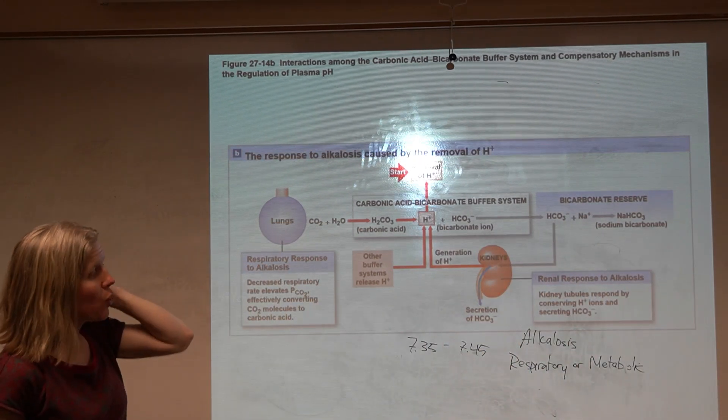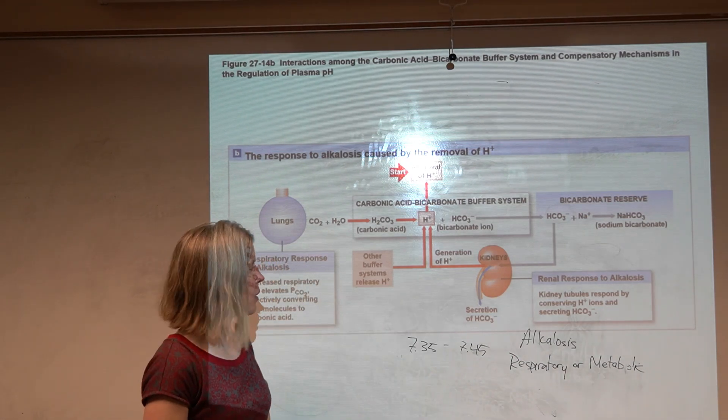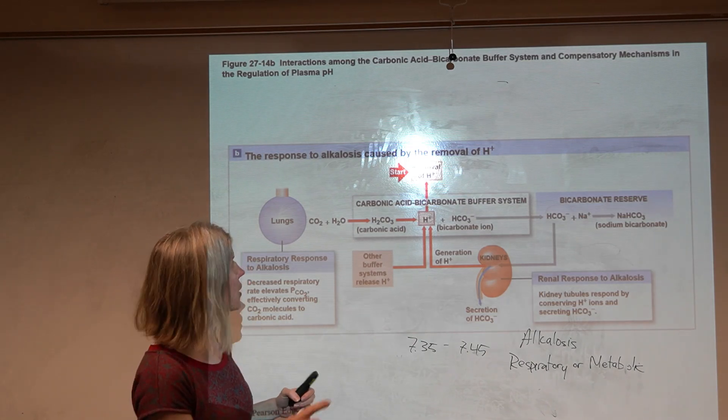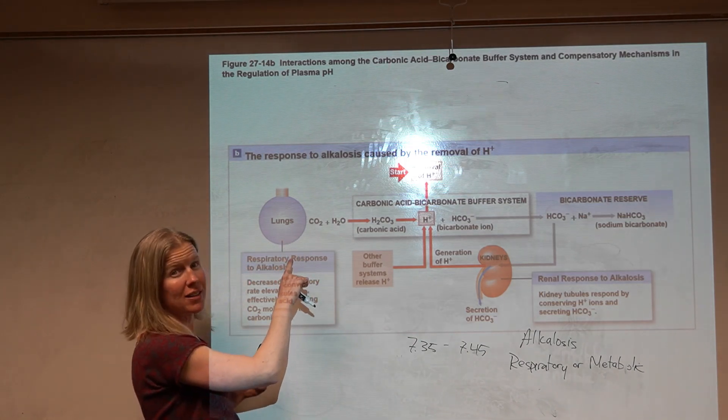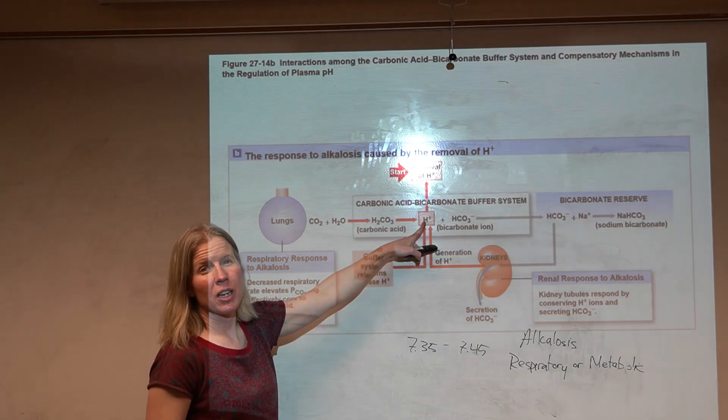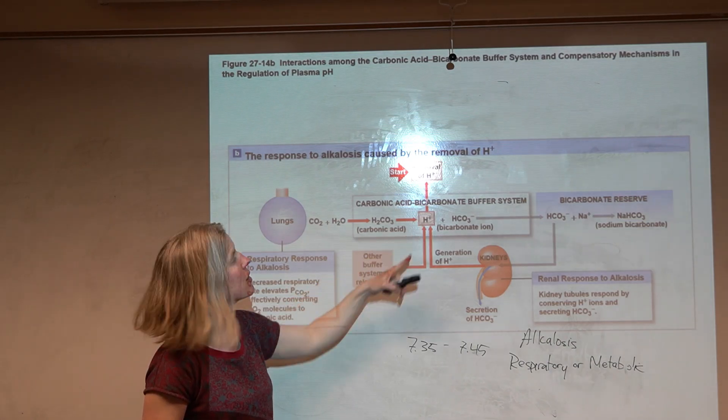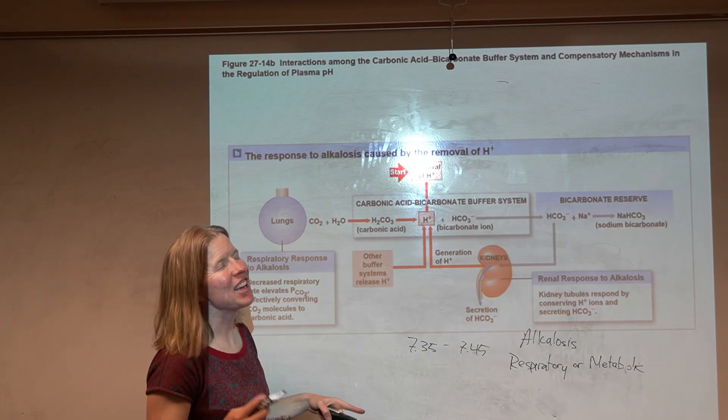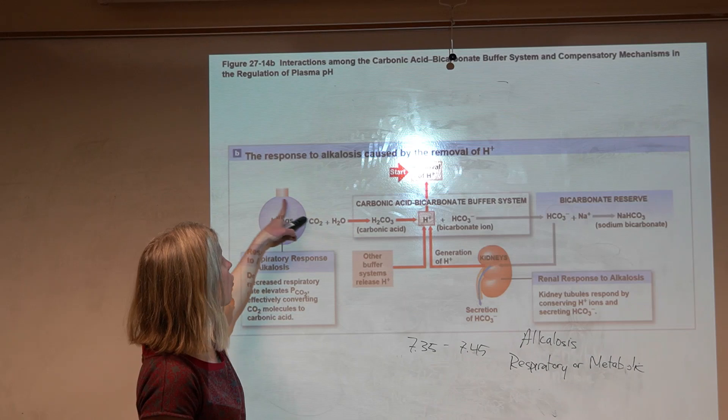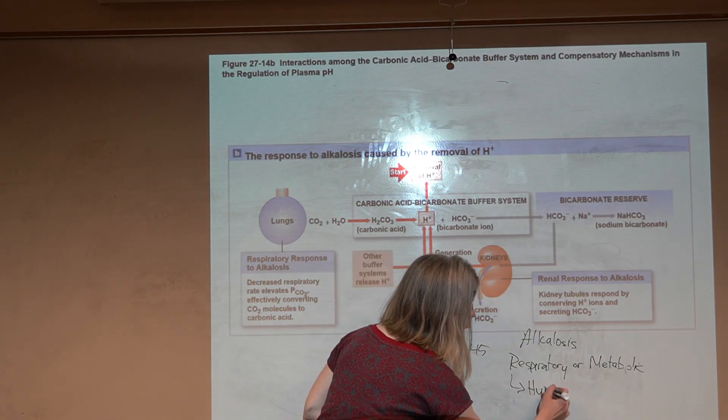Alkalosis is the opposite problem, but we still have respiratory and metabolic causes for this. Respiratory alkalosis - think through this. How are we going to increase the pH, have low amounts of hydrogen? We need to get rid of it. So respiratory alkalosis would be caused by hyperventilation.